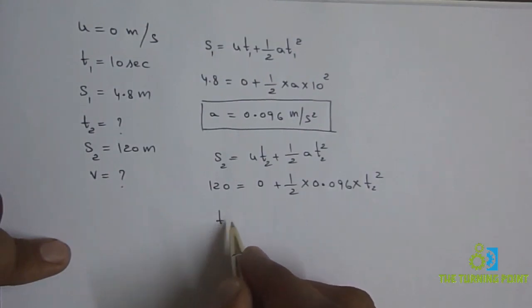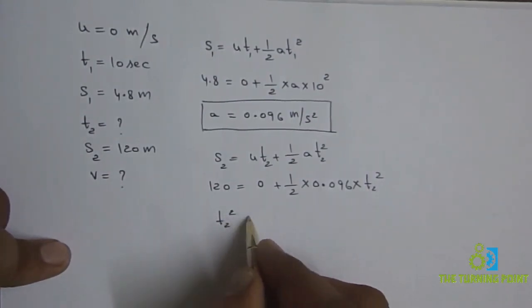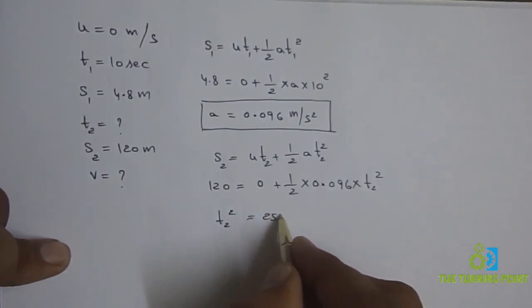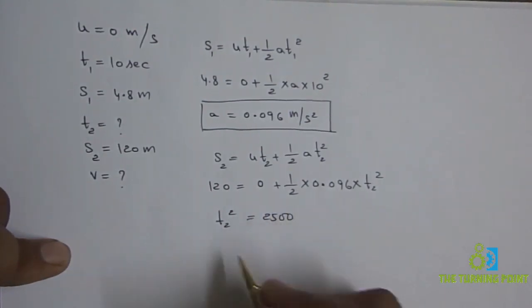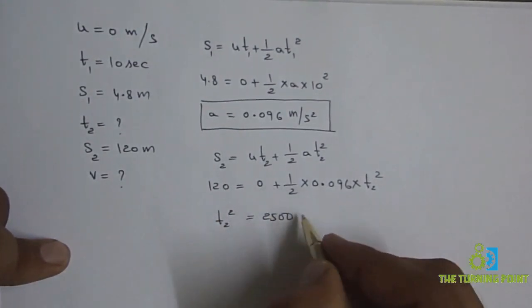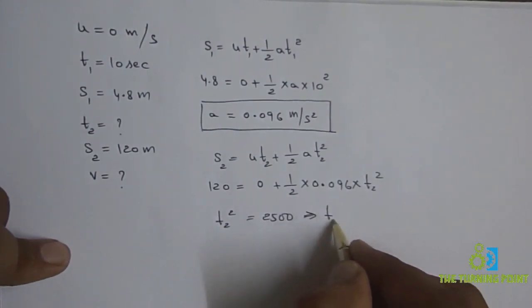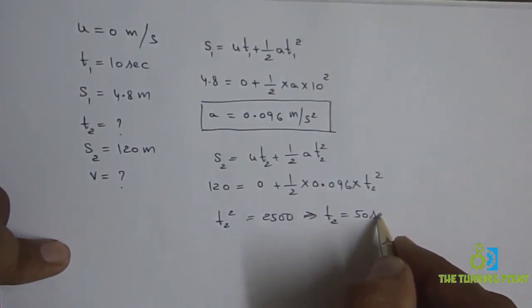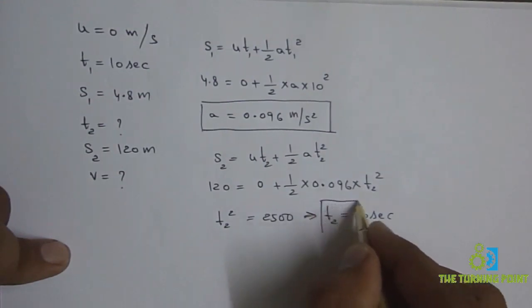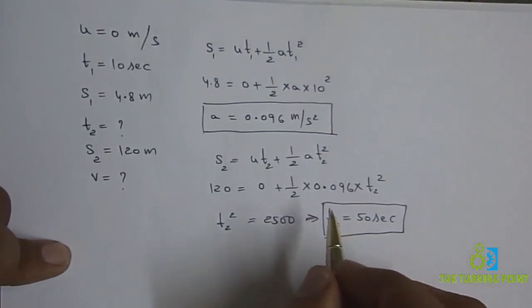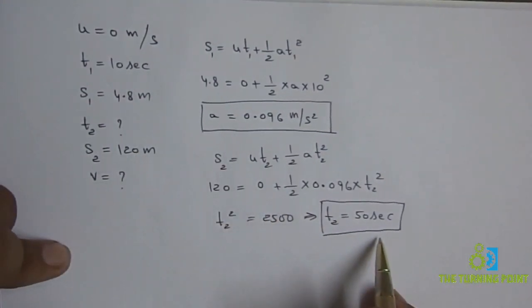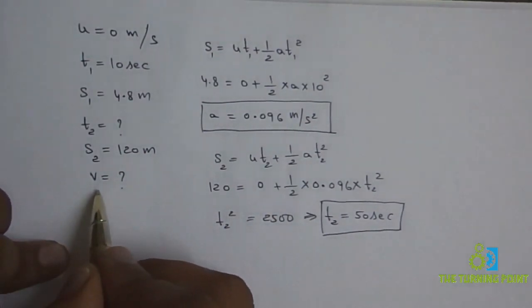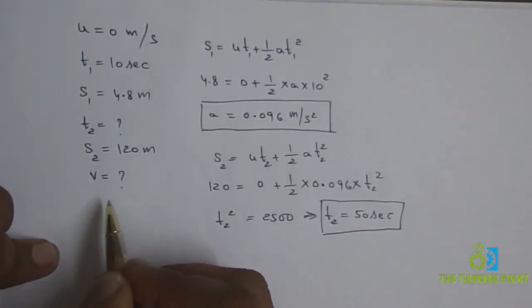Solving, t2² = 2500, so t2 = 50 seconds. That means the time required to travel a total distance of 120 meters is 50 seconds.